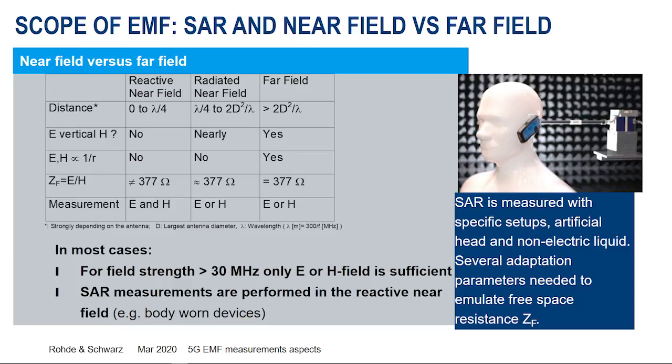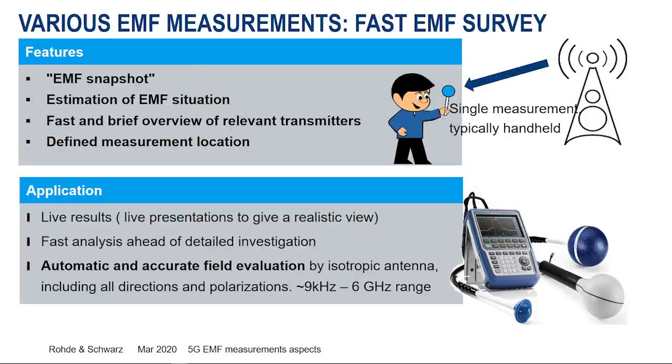The typical EMF measurement done on a fast show is the fast scan — typically with handheld equipment like the FPH spectrum analyzer with a handheld isotropic antenna. This gives you a single snapshot of the EMF exposure at this moment in time, at this position. It is mainly done for verifying a site very quickly to get a general impression of how the EMF exposure looks.